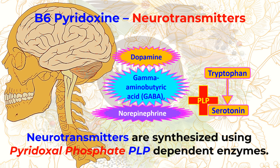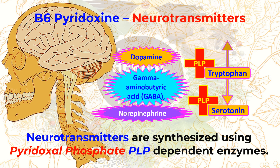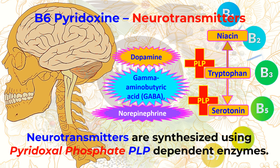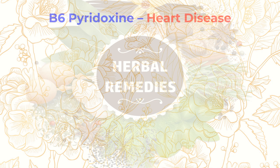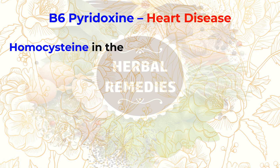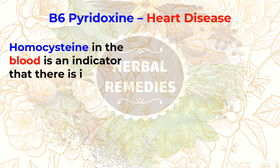The B6 coenzyme PLP is also needed to convert tryptophan to niacin, which is another example of how all of the B vitamins work together. Elevated homocysteine, an amino acid in the blood, is an indicator of increased risk of cardiovascular disease.